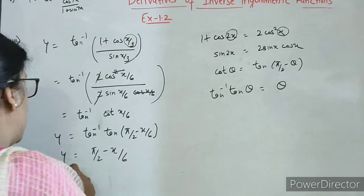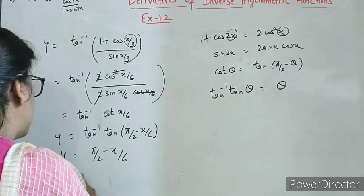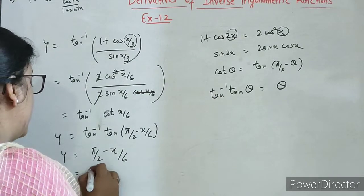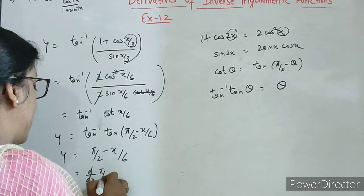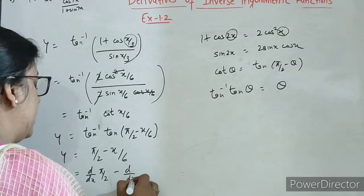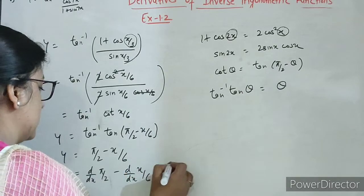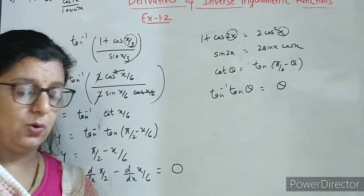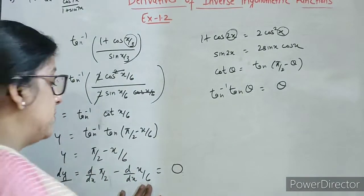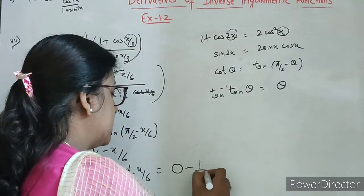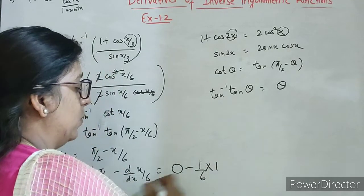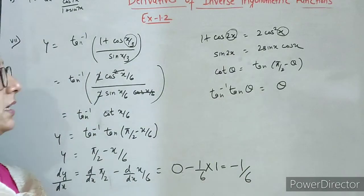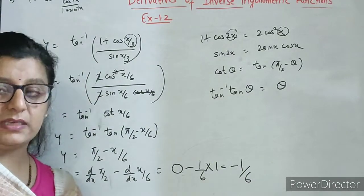Now differentiating on both the sides: d by dx of pi by 2 minus d by dx of x by 6. Pi by 2 is constant so derivative is 0. And x by 6 mein kya hoga? Yeh 1 by 6 toh bahar aa jayega, aur x ka derivative 1 hota hai. So final answer is minus 1 upon 6.